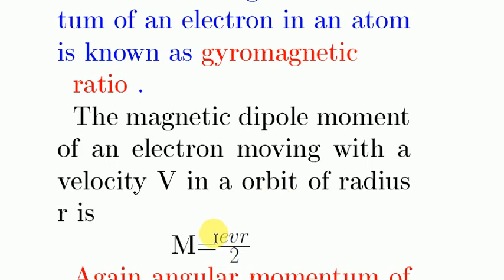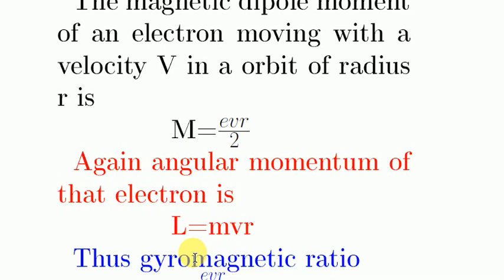We can show that the expression of magnetic dipole moment is M equal to evr by 2, where magnetic dipole moment is denoted by capital M. Again, angular momentum of an electron is capital L equal to mvr, denoted by capital L.